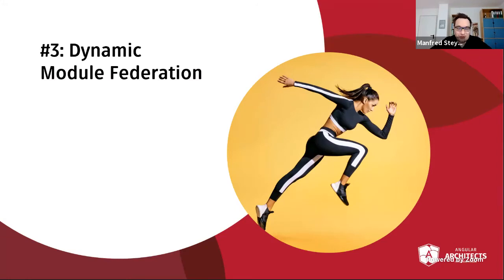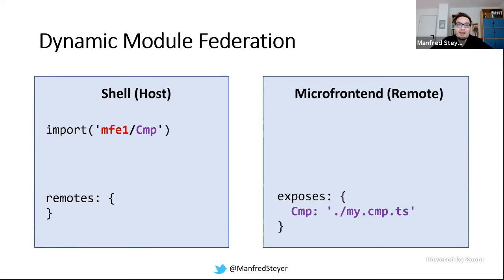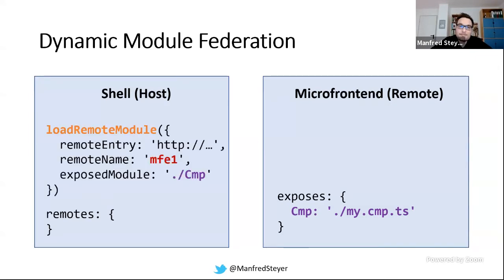But there is even more to Module Federation — a thing called Dynamic Module Federation. So far, our shell needed to know which micro front-ends are available and loaded at least their entry points when the application started. With Dynamic Module Federation, you don't even need to declare the remotes upfront. You can provide the necessary metadata on demand — when your shell starts, it could communicate with the backend, and the backend could inform it about the current micro front-ends and what menu items to provide.